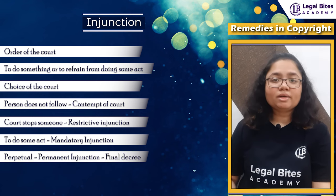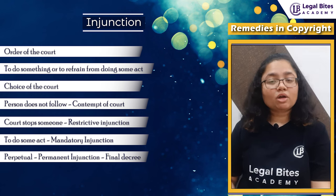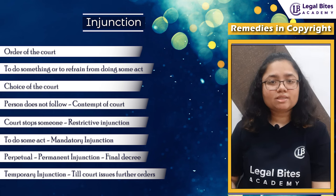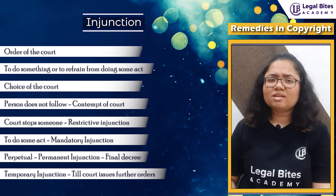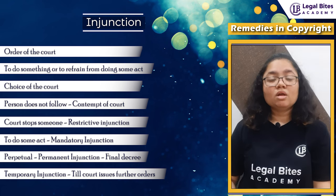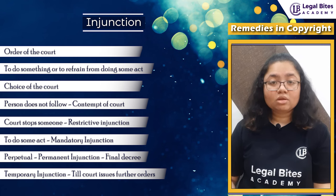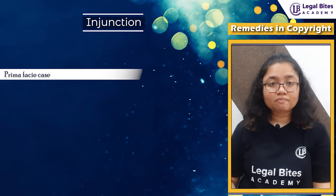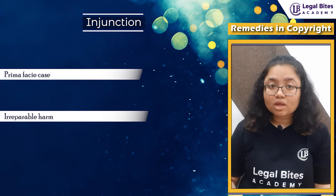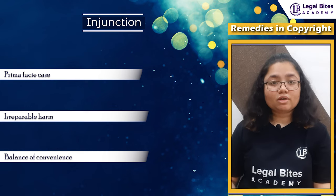Injunction is either perpetual or temporary. Perpetual is permanent injunction, usually ordered in the final decree. Temporary injunction is usually during the proceedings till the court issues further orders, mainly to maintain the situation as it is. Wherever injunction is claimed, three elements must be proved: first, there should be a strong prima facie case; second, there should be irreparable harm to the party that cannot be compensated in terms of money; and third, the balance of convenience should be in favour of the party.